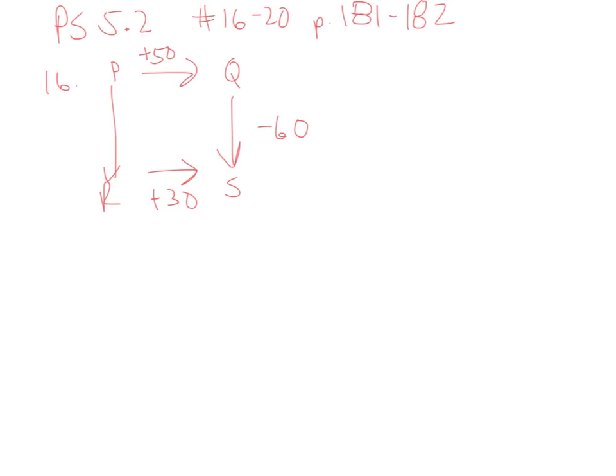But if I went from Q to P, that would become minus 50. Q to S is exothermic requiring minus 60 kilojoules to be released, so S to Q would be positive 60.